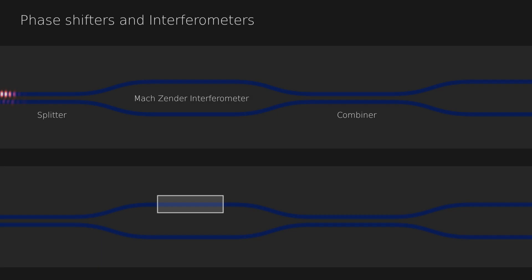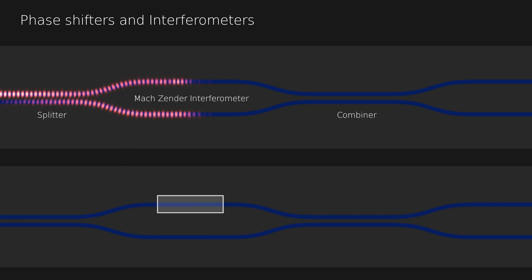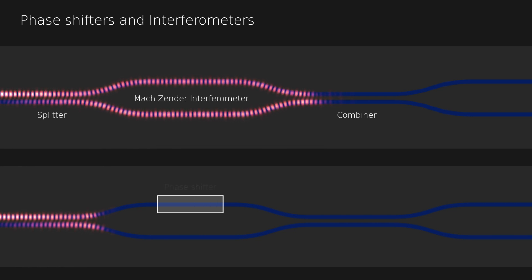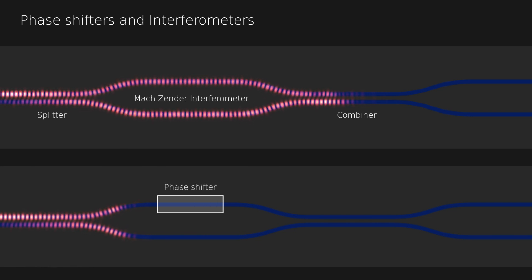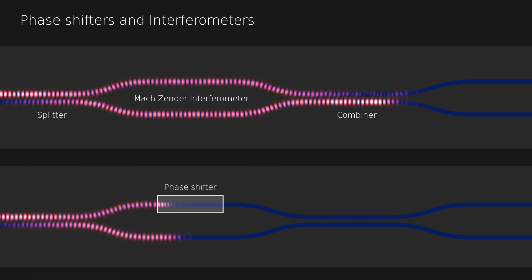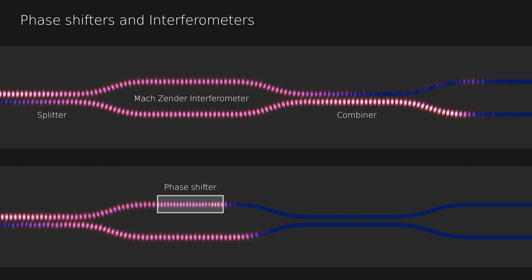In photonic ICs, such couplers can be used to split and recombine waves to build small Mach-Zehnder interferometers. At the combining couplers, the energy is routed depending on the phase and amplitude of the incoming waves. By adding a phase shifter to one or more waveguides, one can control the interference to produce different energy routing patterns.